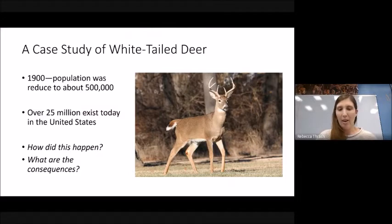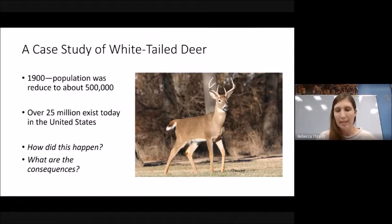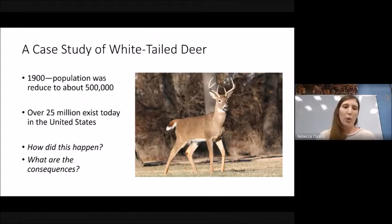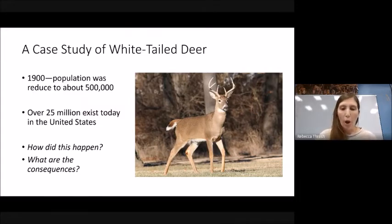Deer can cause many issues — they come into suburban areas and eat plants, but they also have dangerous consequences for drivers. More people are killed in automobile accidents with deer than in shark attacks. This is the type of environmental issue about populations that could come up on the AP exam. You need to be able to explain how this happened and understand why the consequences are what they are.